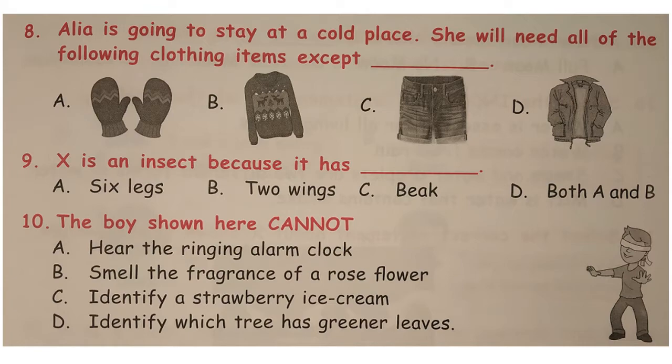Alia is going to stay at a cold place. She will need all of the following clothing items except dash. The correct option is C because half pants are worn in summers.